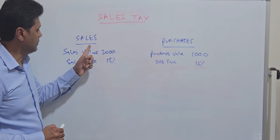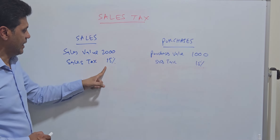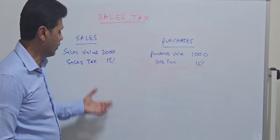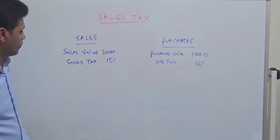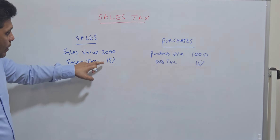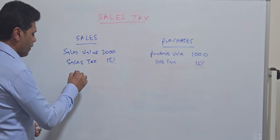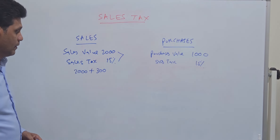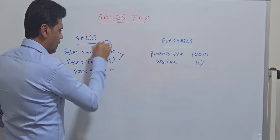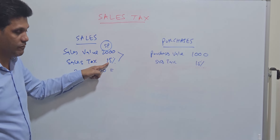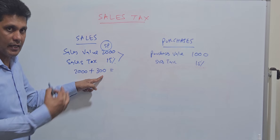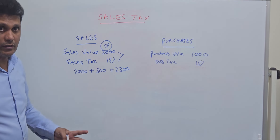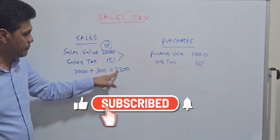Let's look at an example of how to record these transactions in the books of accounts. We have sales value of 2000 and VAT of 15%, and purchases value of 1000 with VAT of 15%. When you sell the goods worth 2000, you collect 15% VAT from customers — 15% of 2000 is 300. So you will be collecting a total of 2300 from the customers, meaning accounts receivable will be debited with 2300.